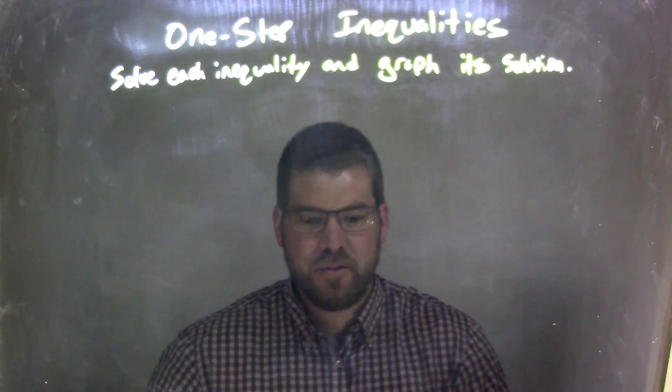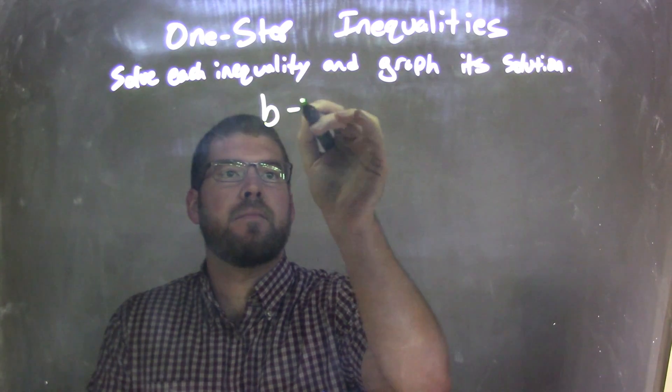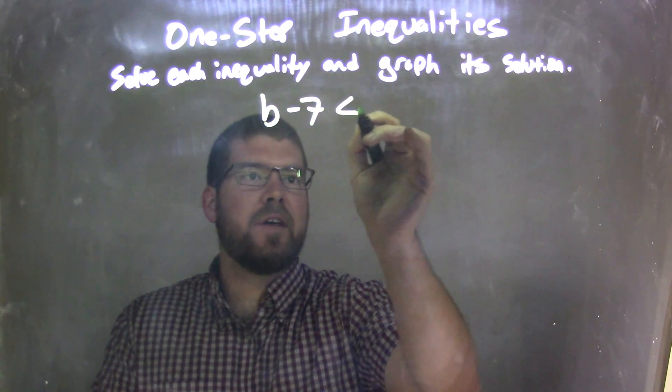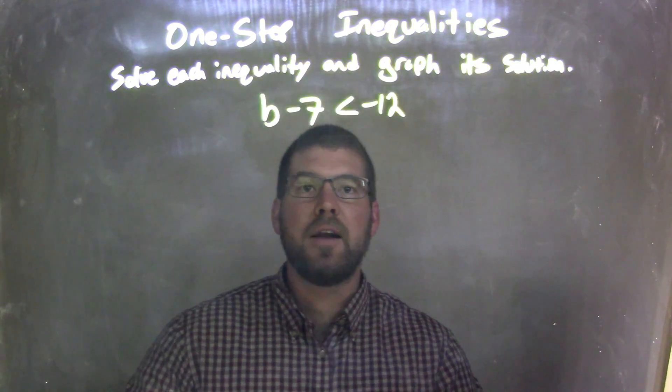I'm going to solve each inequality in a rapid solution. So if I was given this inequality, b minus 7 is less than negative 12.